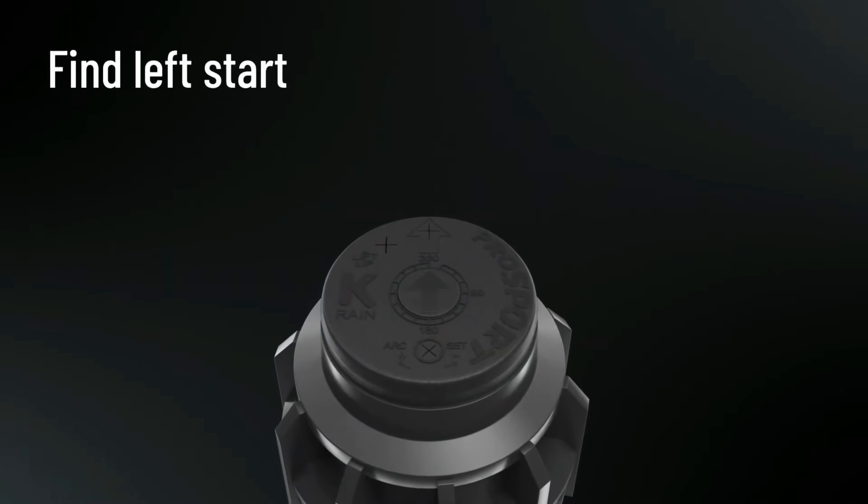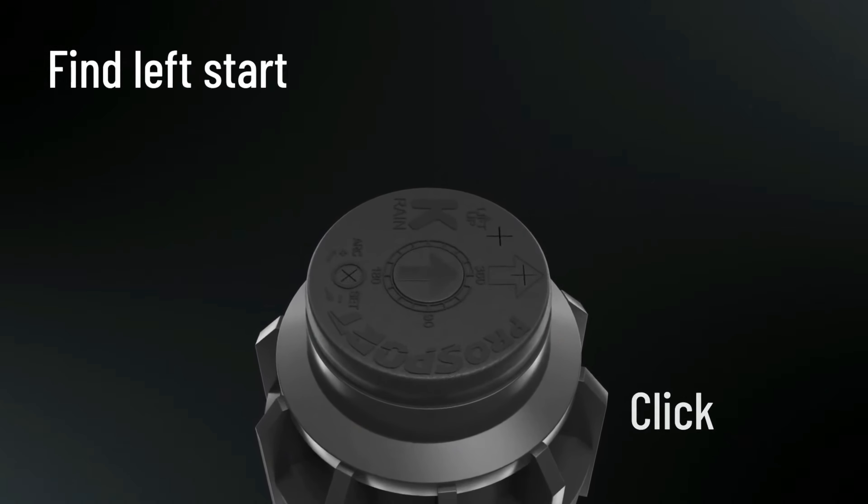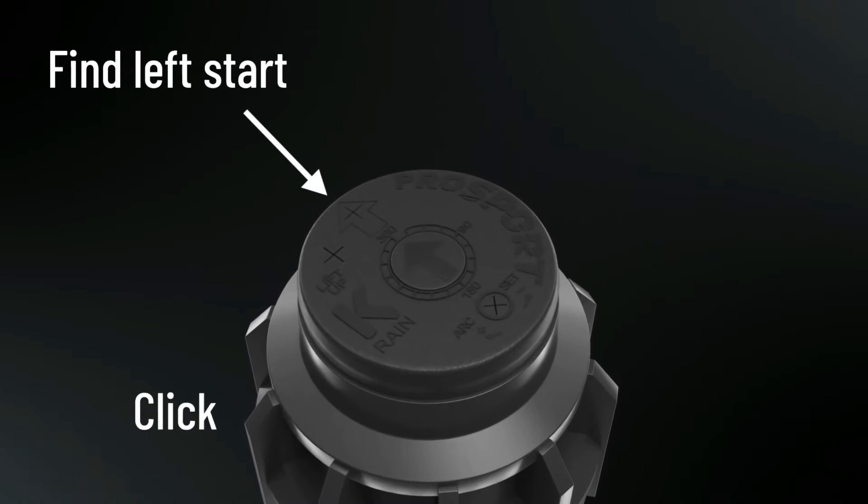Place your fingers on the top center of the nozzle turret and rotate the turret all the way to the right until you hear a click. Then rotate the turret to the left until you hear another click. This point is the left start position. The left start is a fixed position within the rotor and does not change.